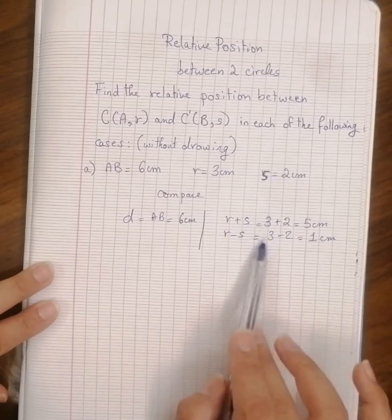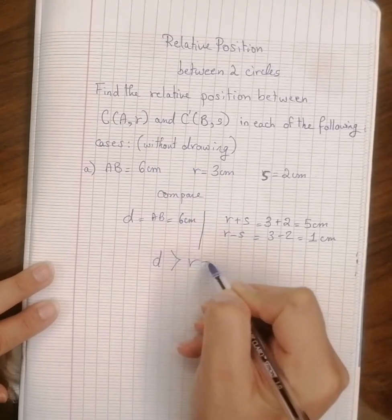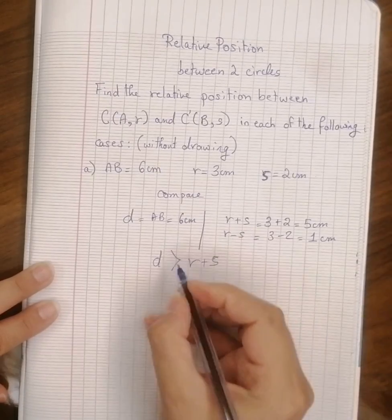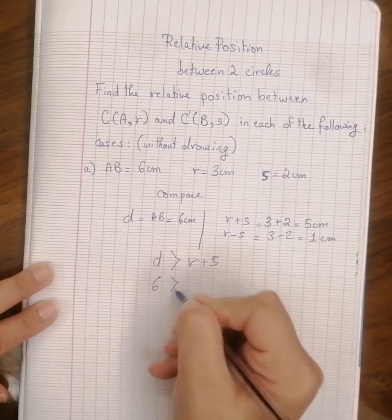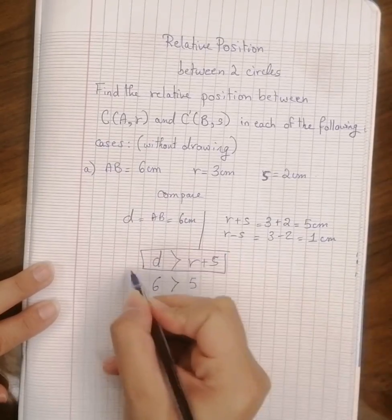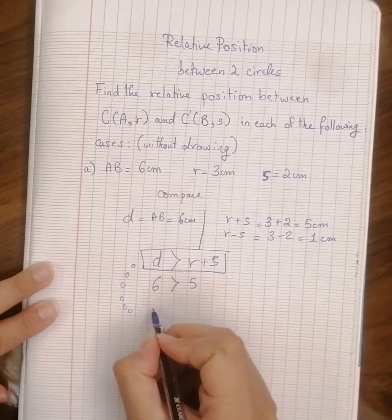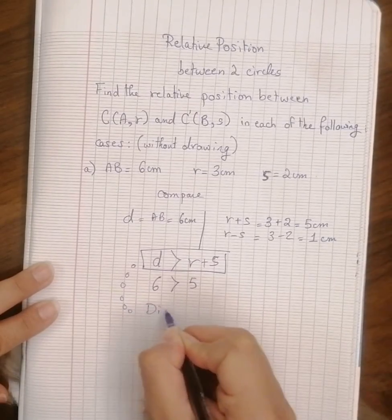Yes, the distance is greater than r plus s. And why is that? Because 6 is greater than 5. So we get this rule. This rule refers to what? Refers to the case of disjoint.